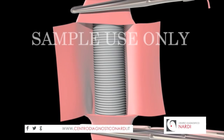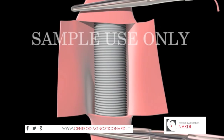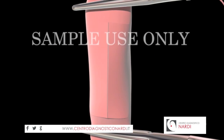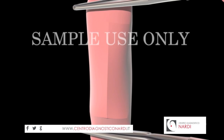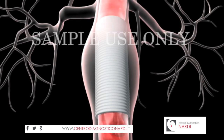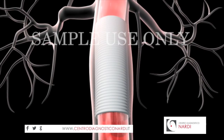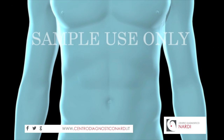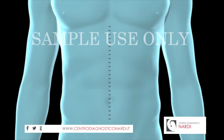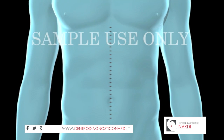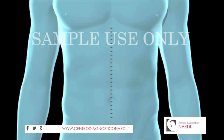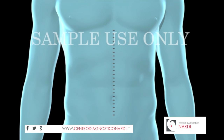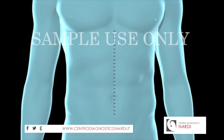Your surgeon will stitch the wall of the aneurysm closed over the newly placed graft. The graft will reinforce the walls of the aorta. Your surgeon will close the abdominal incision with stitches. The total length of this procedure is usually four to six hours.